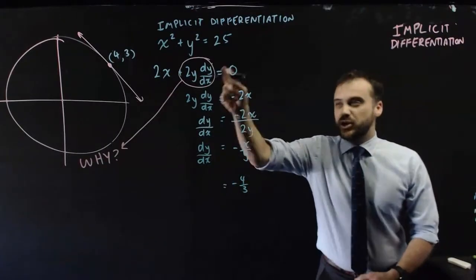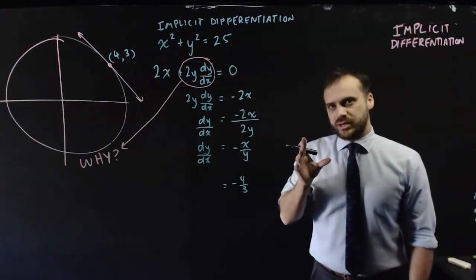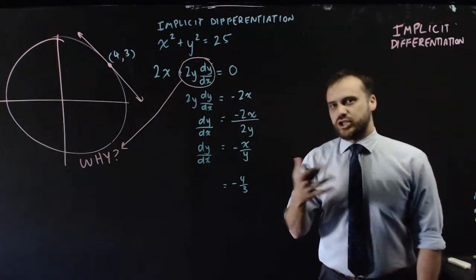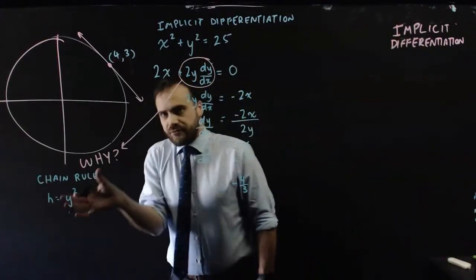Now that we've gone through the process, the big question is why? Why this dy/dx with our y term here? And the fast answer is the chain rule. Think of y squared, think of this y term as a function all by itself.